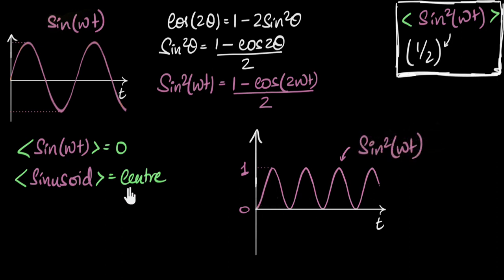And we have gotten 1 minus cos 2ωt, we have graphed it, so that means this is the graph of sin² ωt, and you're seeing right in front of your eyes, it's a sinusoid, and therefore I can say, the mean value of this should be right in between. And where is the center of this? It's between zero and one, and that is half.